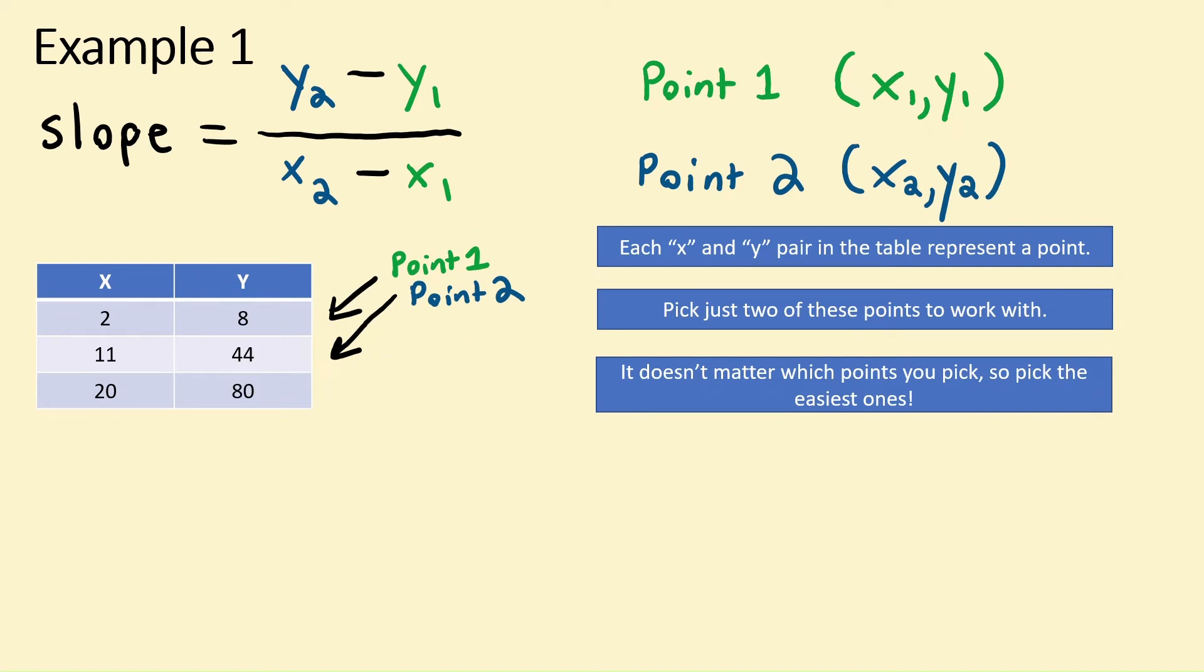Now let's start identifying which values will correspond for each point. Looking at point 1, our x1 will be 2 and our y1 will be 8. Now looking at point 2, our x2 will be 11 and our y2 will be 44. That's straightforward enough.